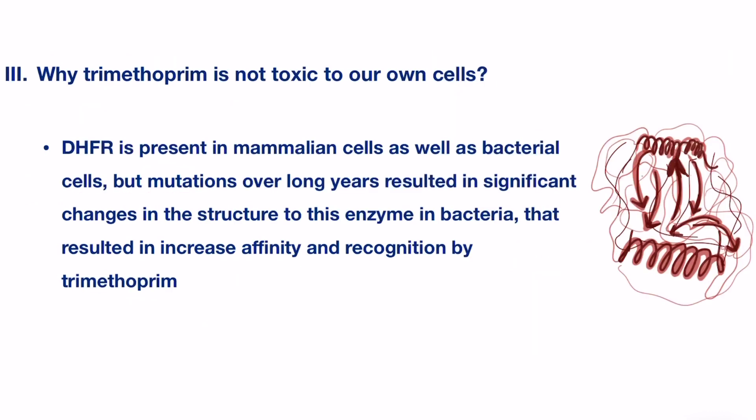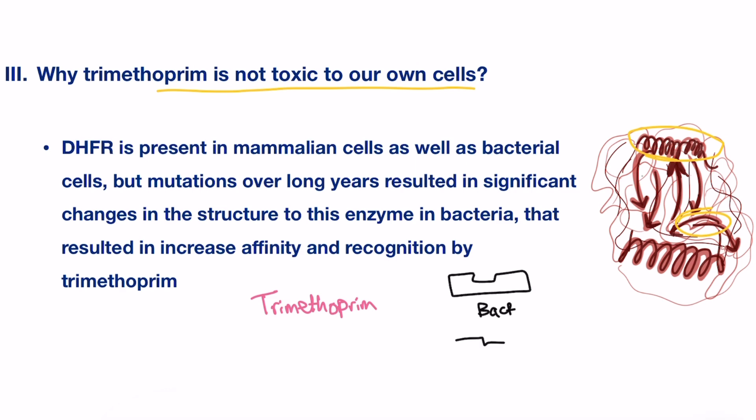Moving to the last part of this video: dihydrofolate reductase is present in both mammalian cells, like humans, and bacteria as well. Then why is trimethoprim not toxic to our own cells? This is due to mutations that developed over millions of years and resulted in significant differences in the structure between the two enzymes. Most enzymes are basically proteins, so these mutations alter either the sequence of amino acids or the folding of the peptide chain that makes up the enzyme. This mutation led to trimethoprim being able to recognize and bind to the bacterial enzyme more strongly than those in humans.